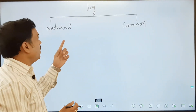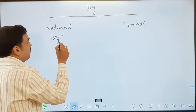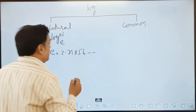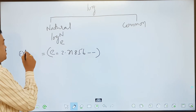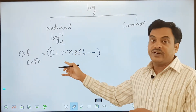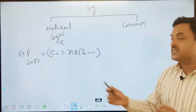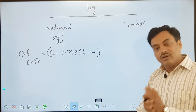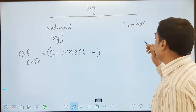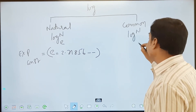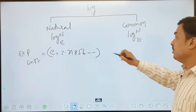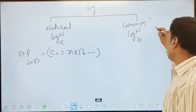Logarithms are of two types. One is called natural logarithms and the other is called common logarithms. Natural logarithms have base E. What is E? E is 2.71856 and so on — it is an irrational value, called the exponential constant. I want you to remember this number. Log n base 10 is called common logarithms. Common logarithms is by default — if you just say log 3 and no base is mentioned, then by default the base is 10.